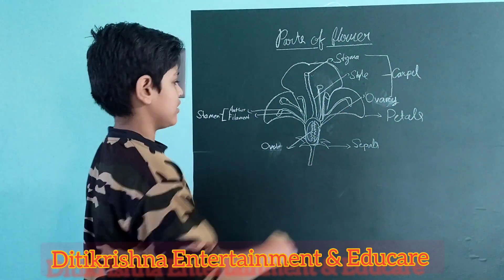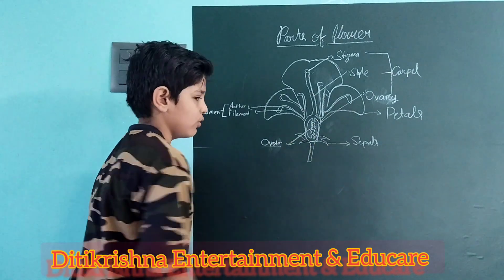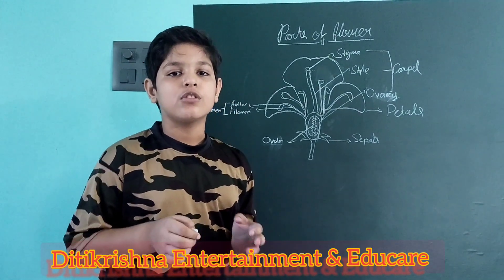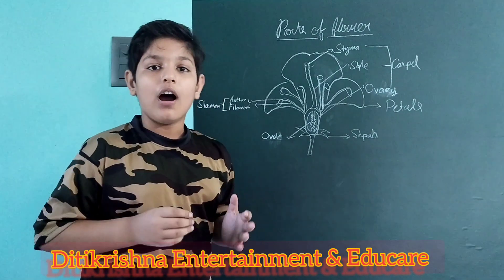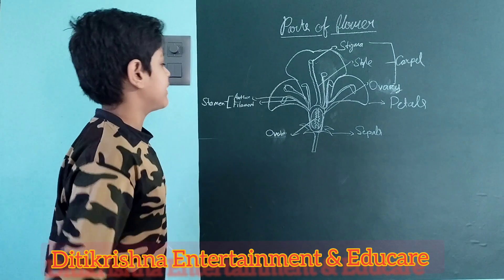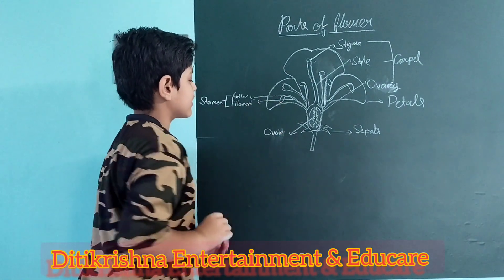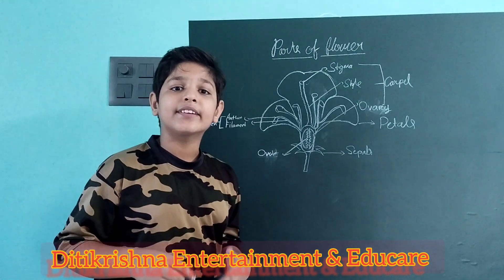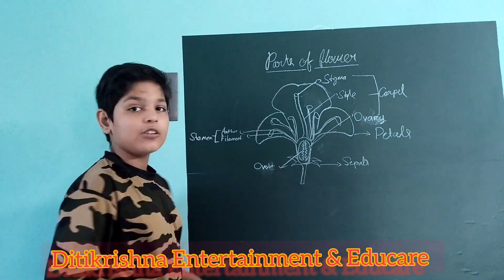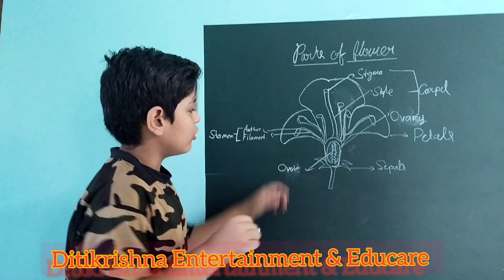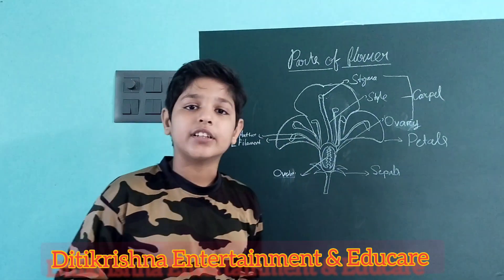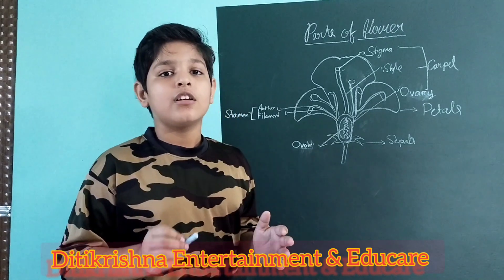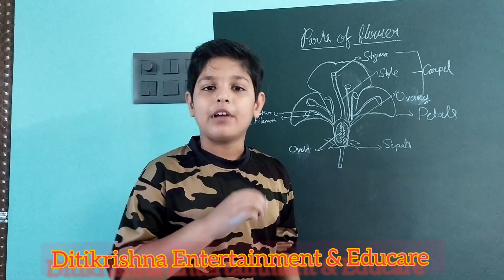So we have the ovary, and inside the ovary are ovules. After pollination, the ovary and ovules change into fruit. Now we have the male part, which is the stamen. The stamen has two parts: anther and filament. The anther is the part where pollen grains form, and the filament is a long tube. Pollination is the process where pollen grains transfer from the anther to the stigma.